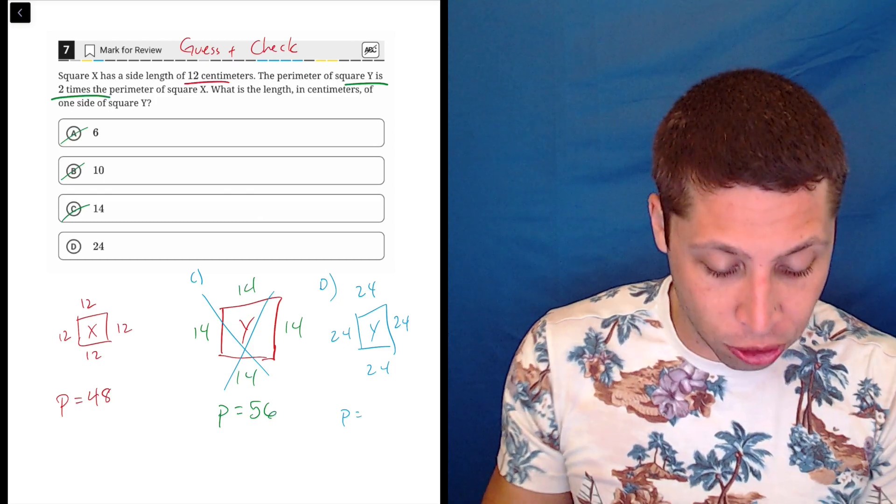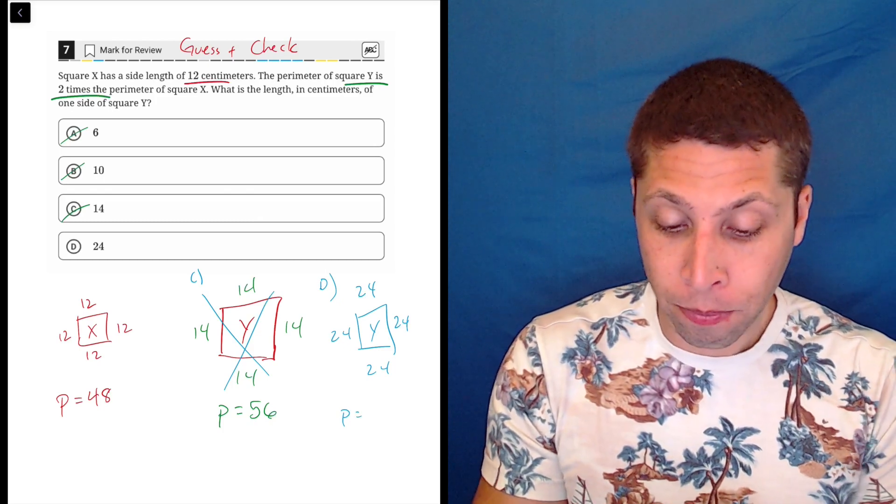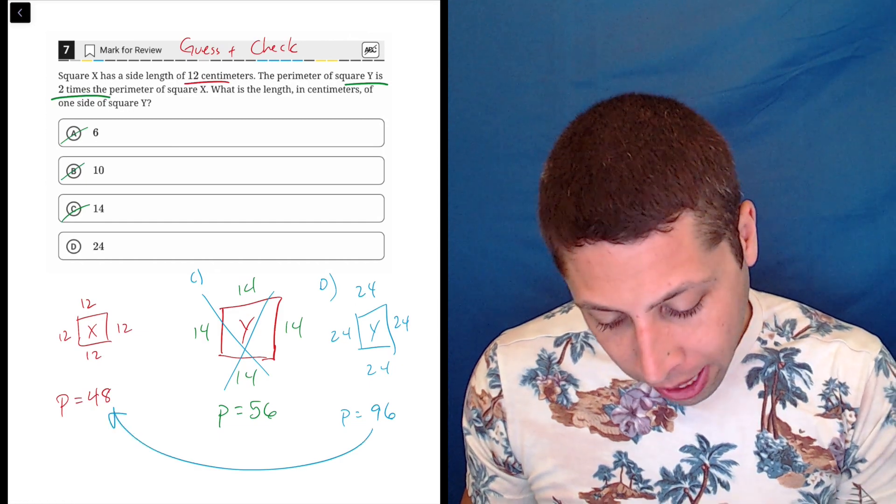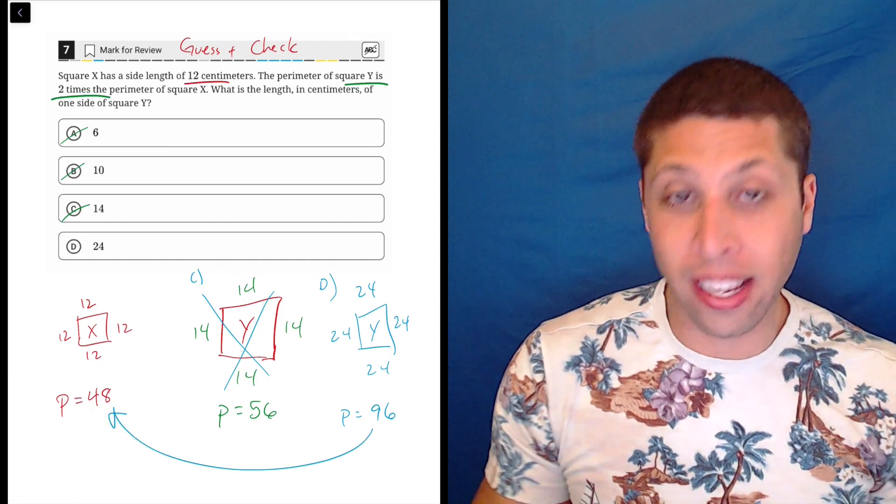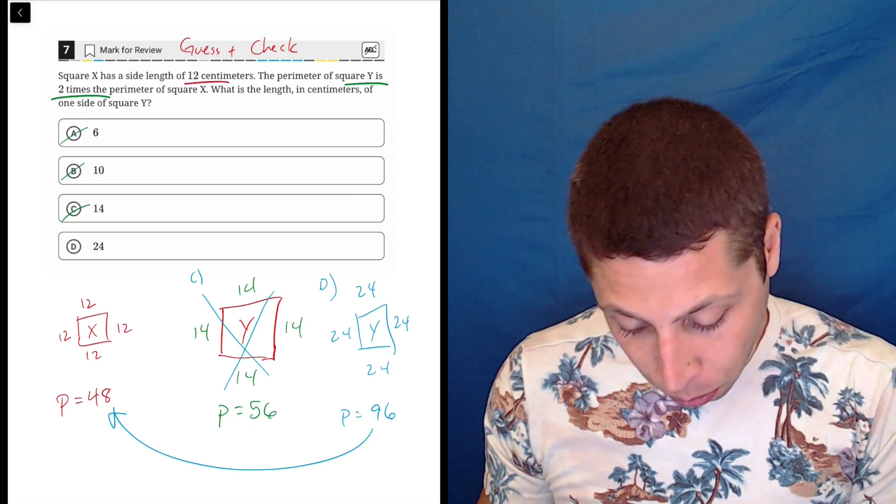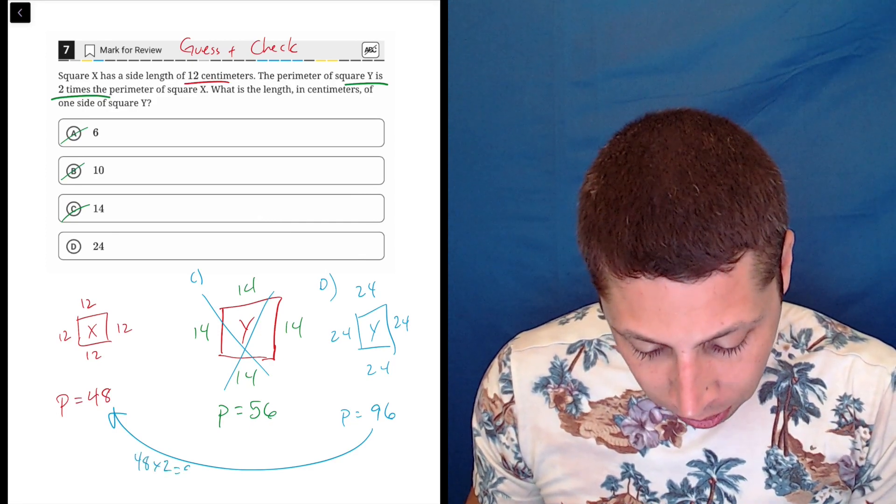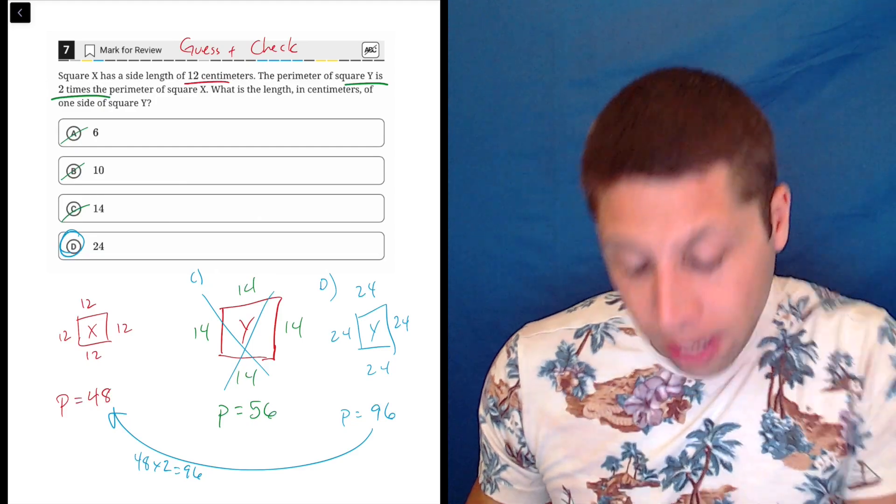So it makes sense, but let's just do it. 24 times four is 96. And so now compare 96 to 48, right? If 48 times two is 96 and it is, we're good to go. So 48 times two is 96 proof that choice D is correct.